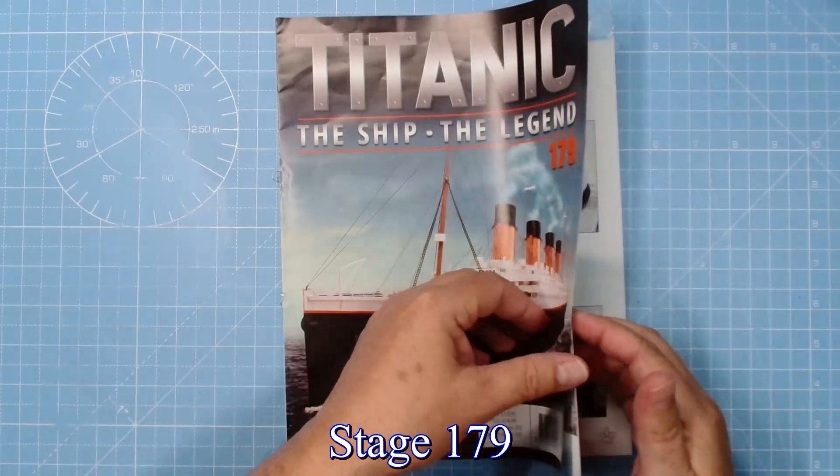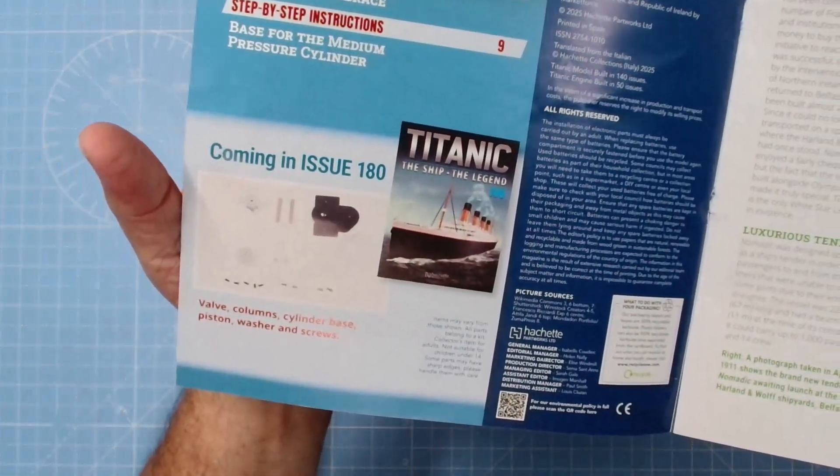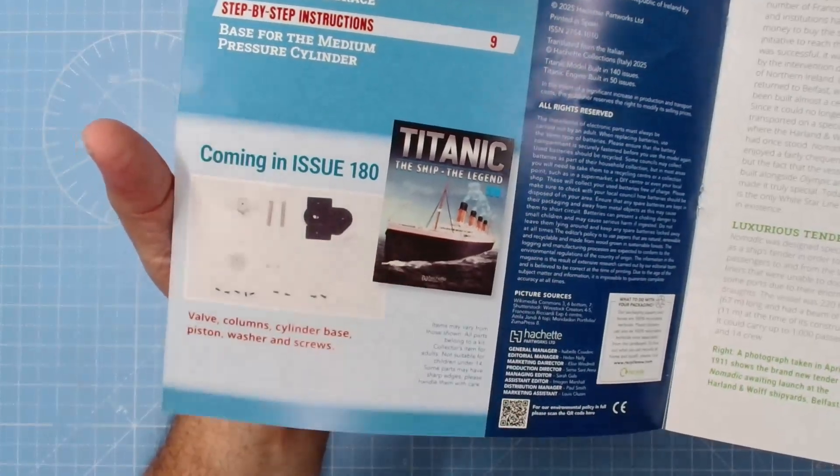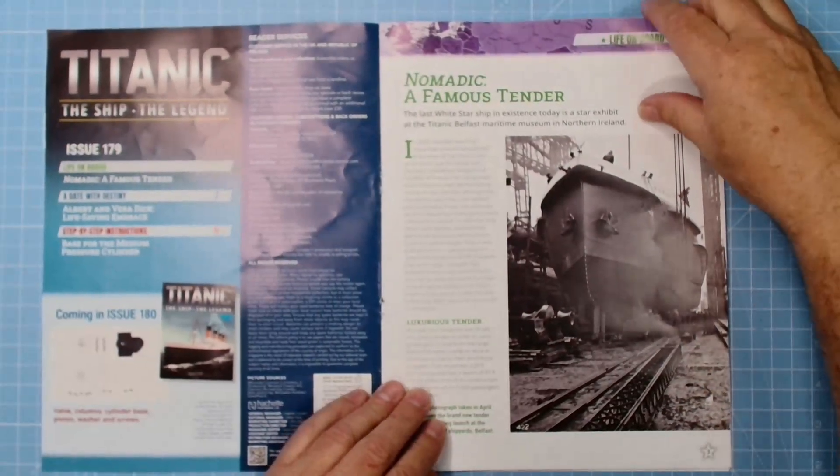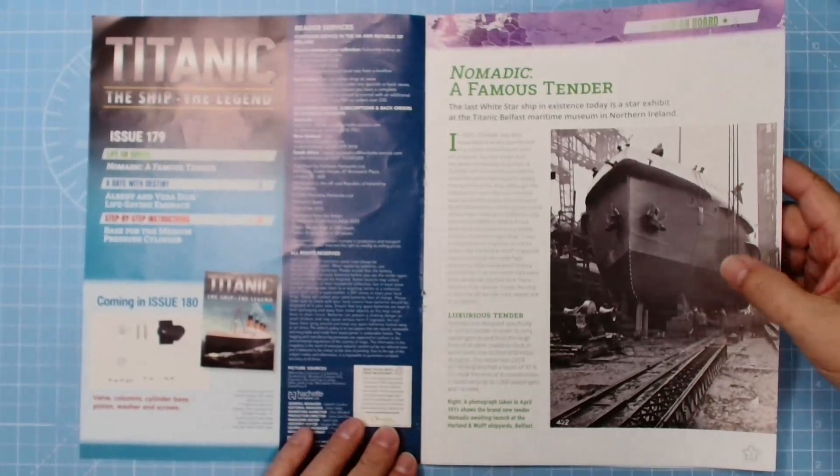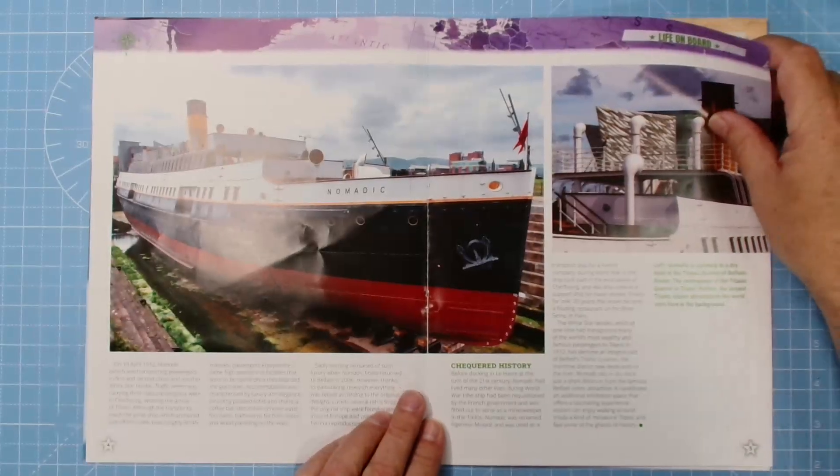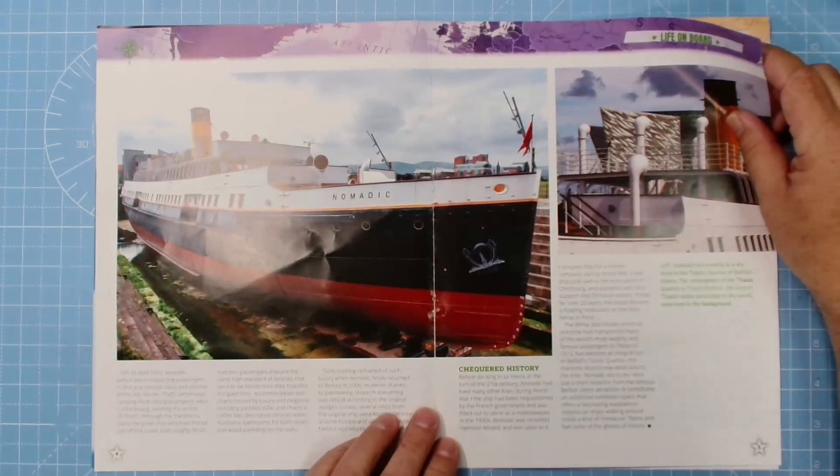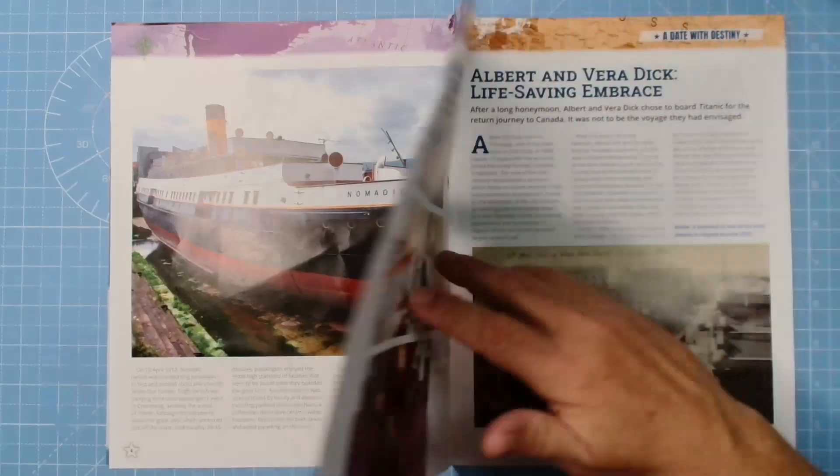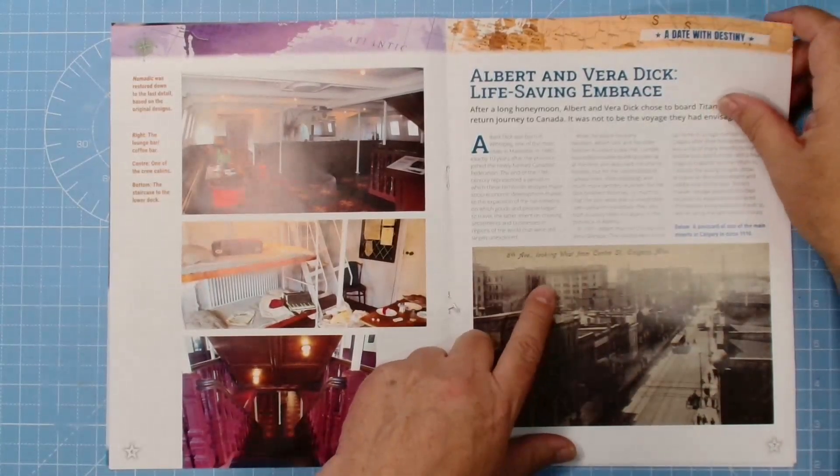Let's get on with stage 179. Looking in the magazine, we have stage 179 coming in issue 80: valve, column, cylinder base, piston, washer, and screws. Here we have an excellent article on Nomadic, a famous tender. I'll have to go to Belfast to have a look because it's still there on display. That looks cool, the interior is cracking. This is another excellent read as well.